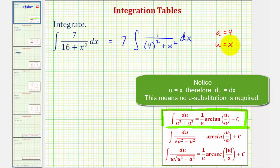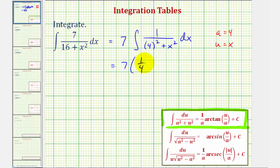Now that we have a and u, we can just apply the integration formula. This would be equal to seven times one over a, or one-fourth, times arctangent of u divided by a, which is just x divided by four,